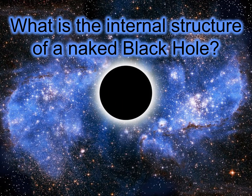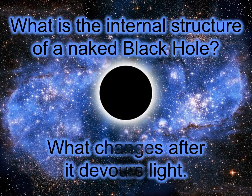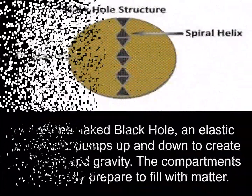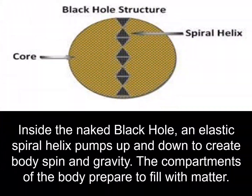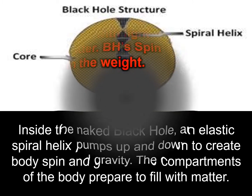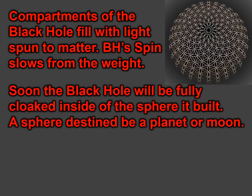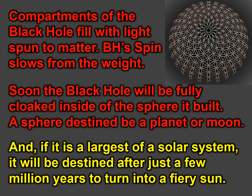What is the internal structure of a naked black hole, and what changes after it devours light? Inside the naked black hole, an elastic spiral helix pumps up and down to create body spin and gravity. The compartments of the body prepare to fill with matter, then fill with light spun to matter. The black hole's spin slows from the weight. Soon the black hole will be fully cloaked inside of the sphere it built — a sphere destined to be a planet or moon, or, if it is the largest of its solar system, destined after just a few billion years to turn into a fiery sun.